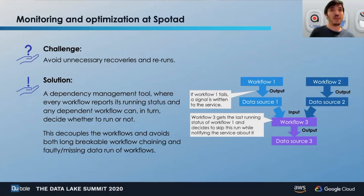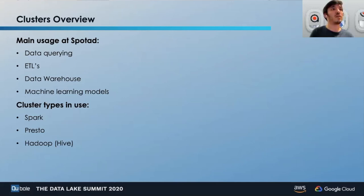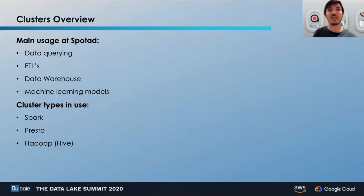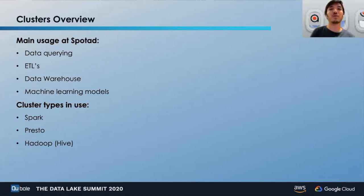Let's move on to our last topic: clusters. The main usage for clusters at SpotEd is for data querying, ETL processes, our data warehouse cluster, and machine learning models. The main cluster types we use are Spark — the only type used for machine learning models, the main type for ETL processes, and also used for data querying. Presto clusters are used mainly for our data warehouse cluster, data querying, and a small number of ETL processes. Hive clusters are used for table stats collection to generate better query performance.